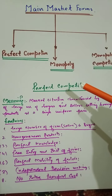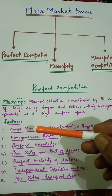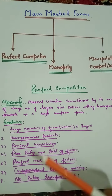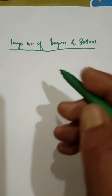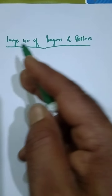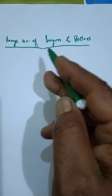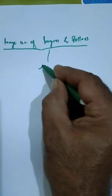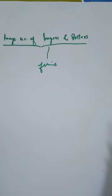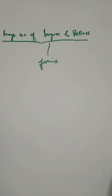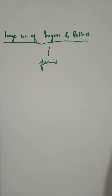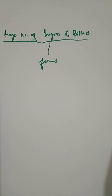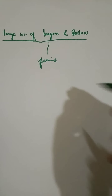Perfect competition is better understood through its features. The first important feature is a large number of buyers and sellers. The number of firms or buyers and sellers under perfect competition is very large — so large that no firm or seller by their individual actions can affect the market price.